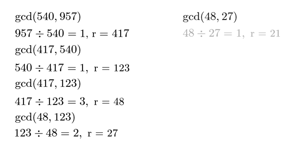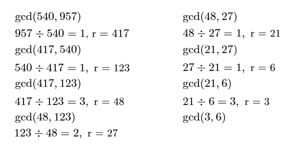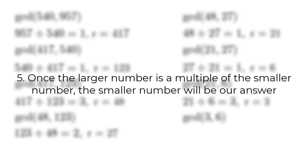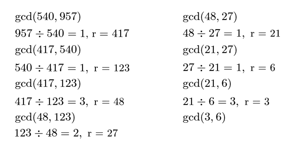If we repeat this process a couple more times, we get that the greatest common divisor of 417 and 123 is equivalent to the greatest common divisor of 3 and 6. Now that our larger number, 6, is a multiple of the smaller number, 3, our greatest common divisor is the smaller number, which is 3. So, the greatest common divisor of 540 and 957 is 3.